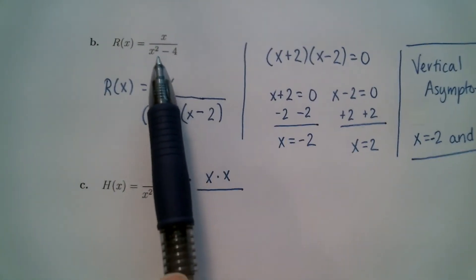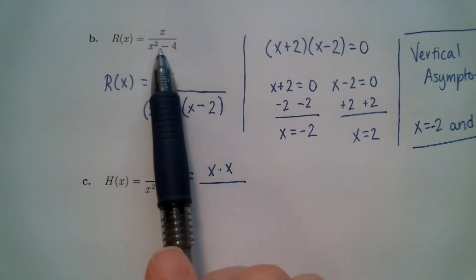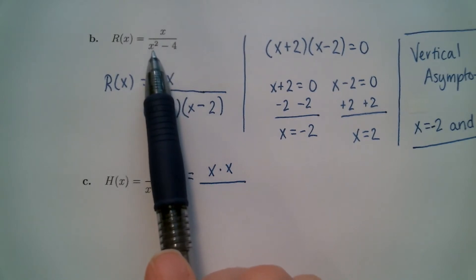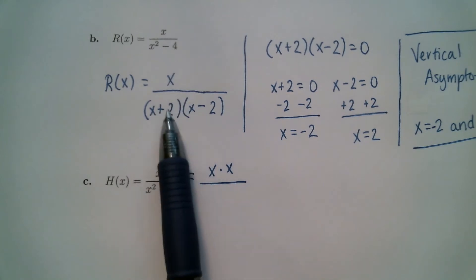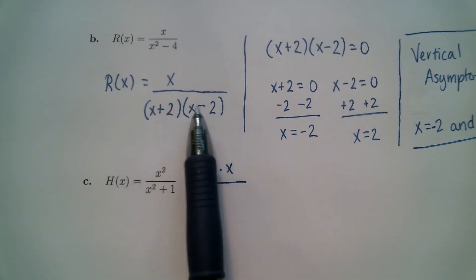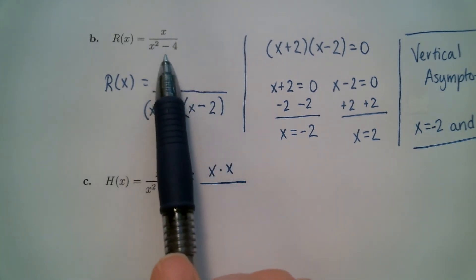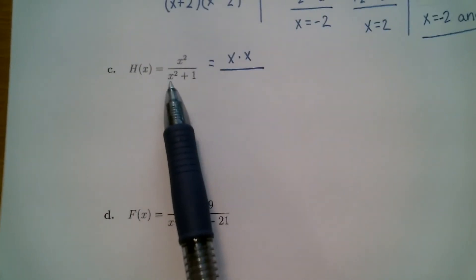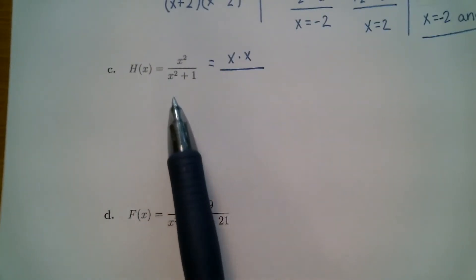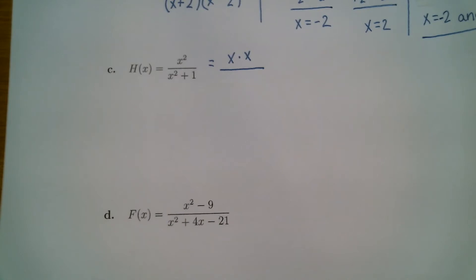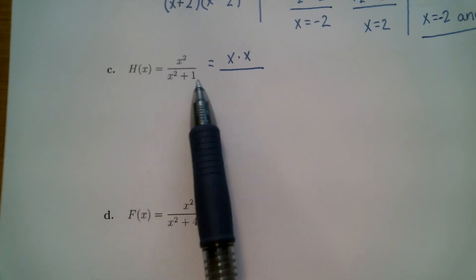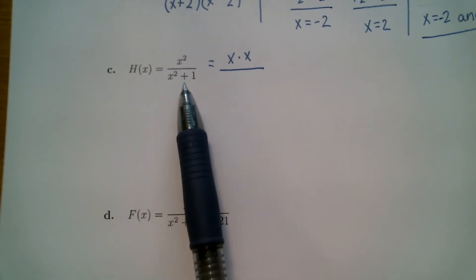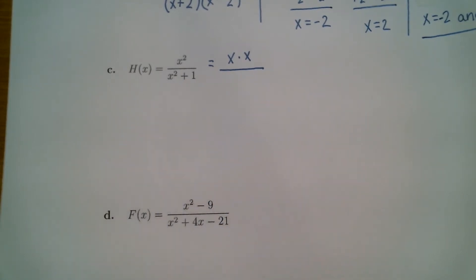If you remember doing part B, this was a difference of squares — the square root of x squared is x and the square root of four is two, and the signs were one of each. That worked because there was a minus sign in the middle. This is also squares — we have x squared, the square root of x squared is x, and the square root of one is one. So these are squares, but you're adding in the middle. When you have a sum of squares, you cannot factor that.